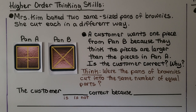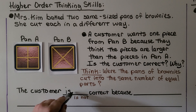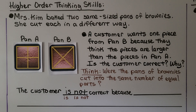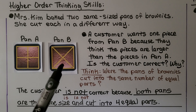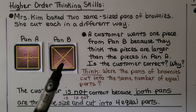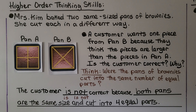Is the customer correct? If you said the customer is not correct, you're right. They're not correct because both pans are the same size and they were each cut into four equal parts. It may look like this piece is bigger than this piece, but it is one of four equal parts of the pan — it's the same amount of brownies, just in a different shape.